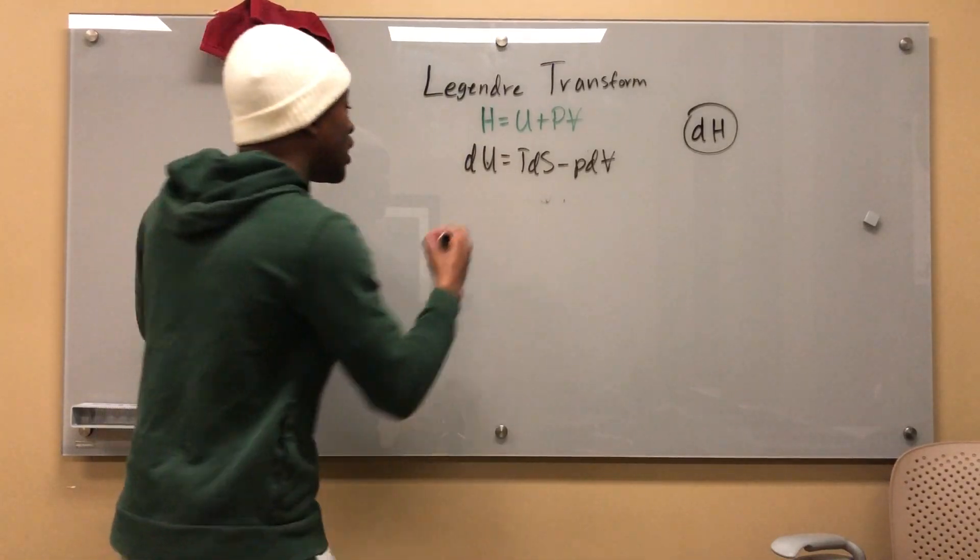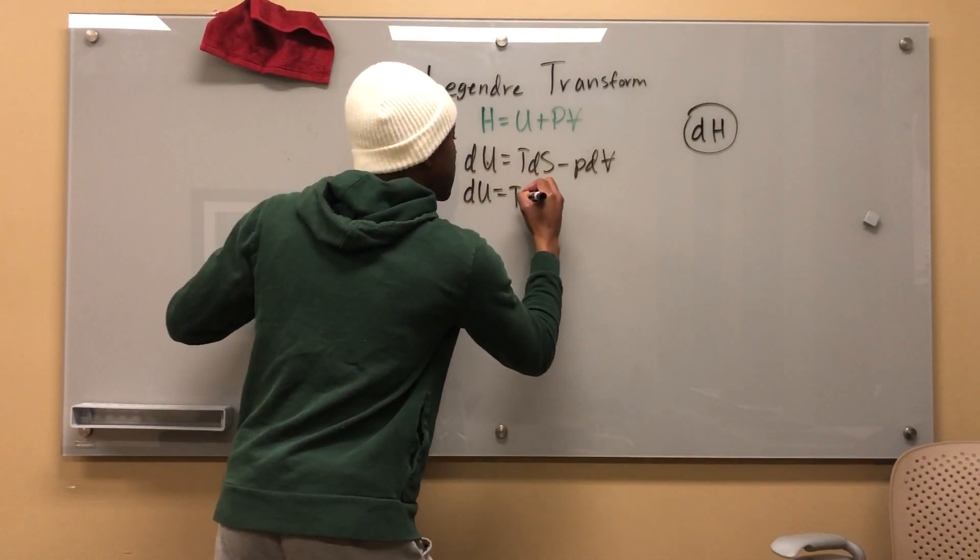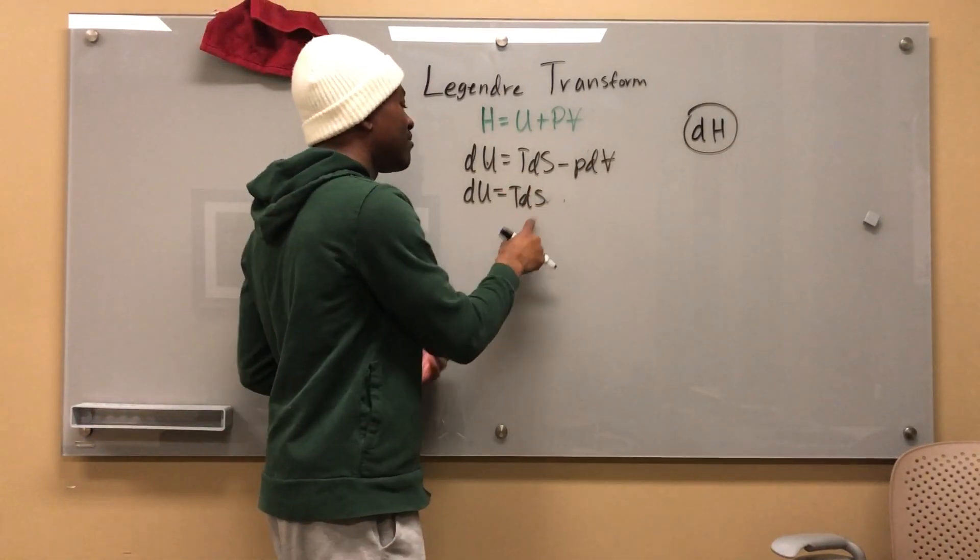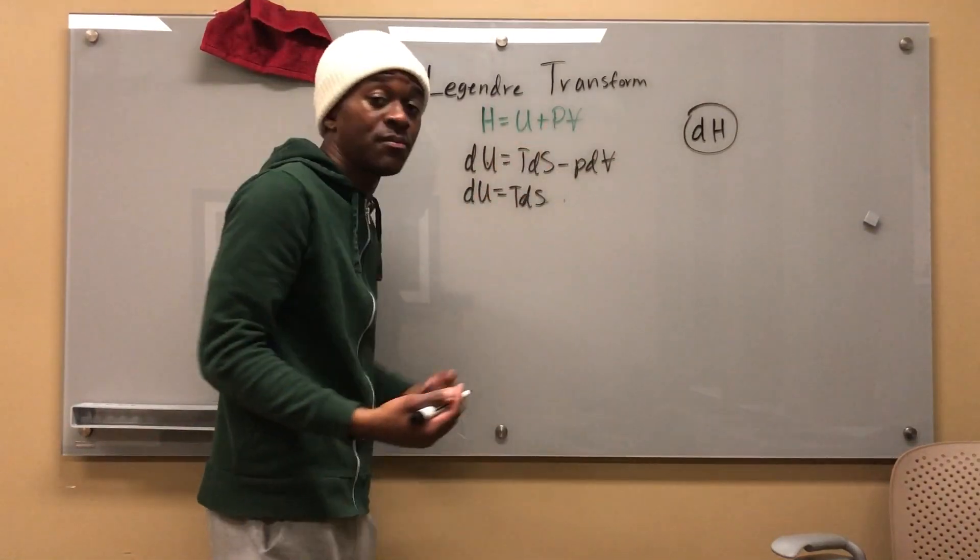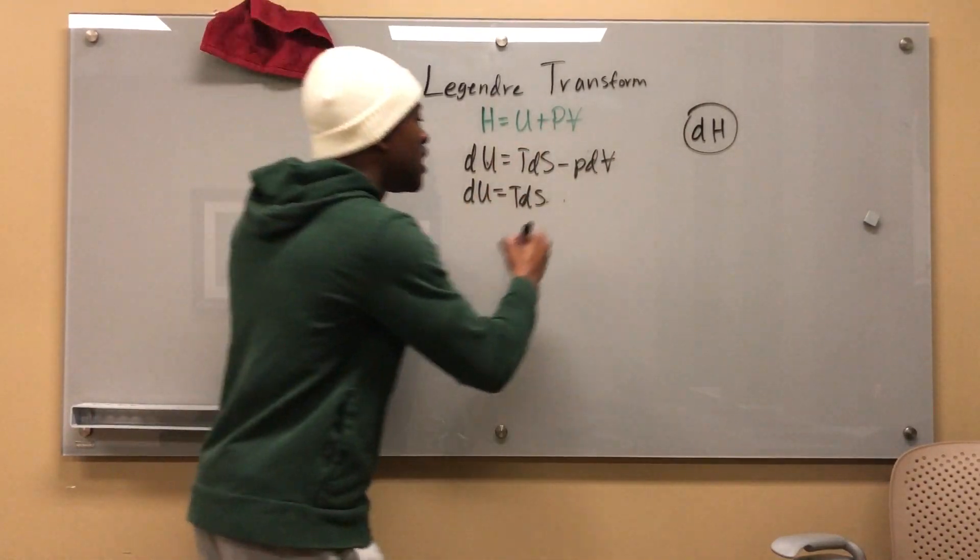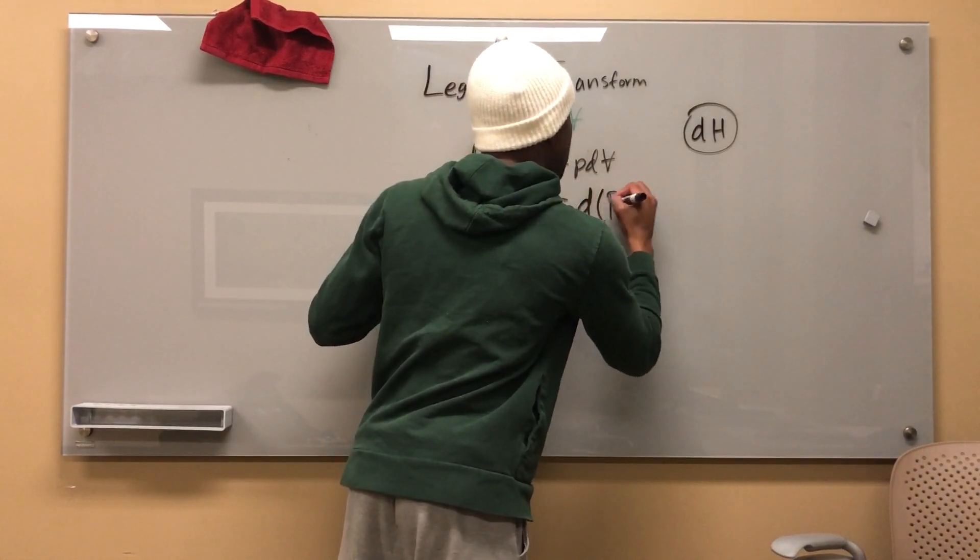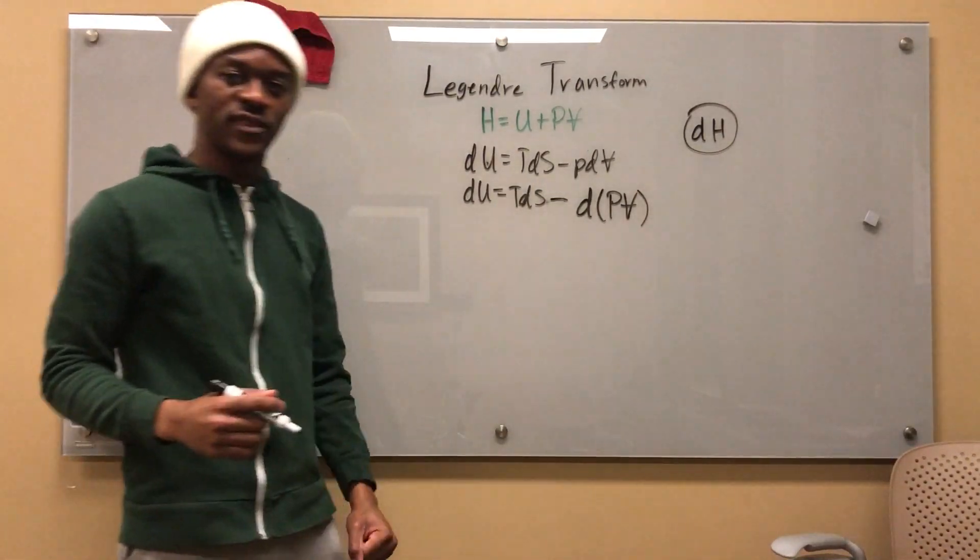So what I'm going to go ahead and do is say that my dU is equal to TdS. And I'm leaving this TdS alone because I don't see any change in my T or my S. I don't even see a T or an S involved in this whole enthalpy equation. So I'm leaving that as it is. And I'm going to go ahead and say minus d(PV).